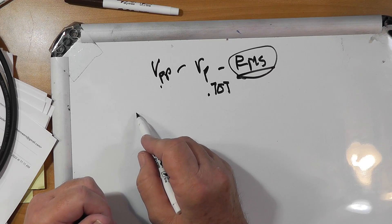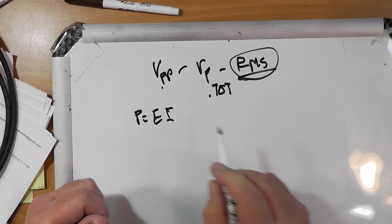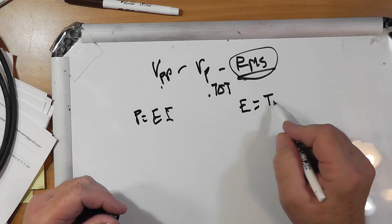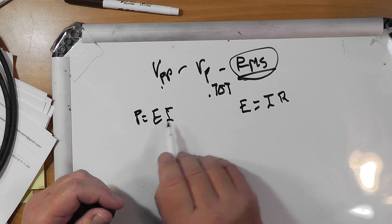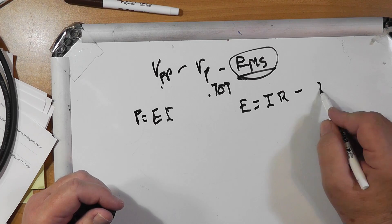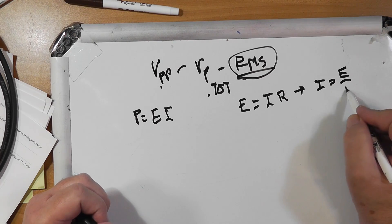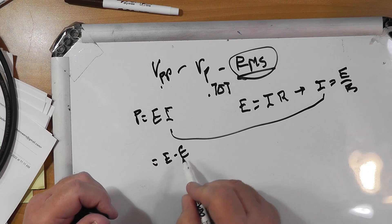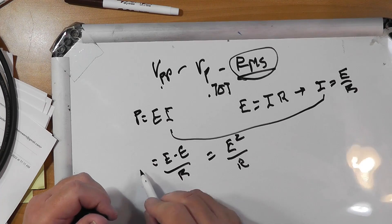Now if we take these two equations, we can always go the power equals EI. Now we know that E equals IR. So we can substitute that in here. We want to substitute for I. So what we do is we're going to solve this for I. I equals E over R. So going back over to here, we say this equals E times E over R equals E squared over R. That's the power.